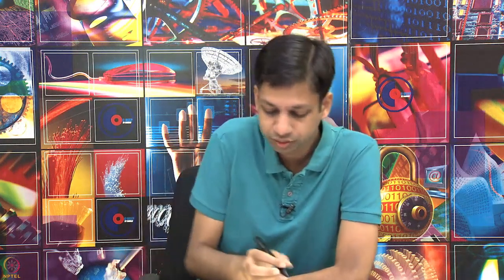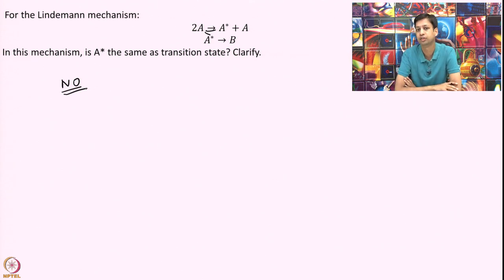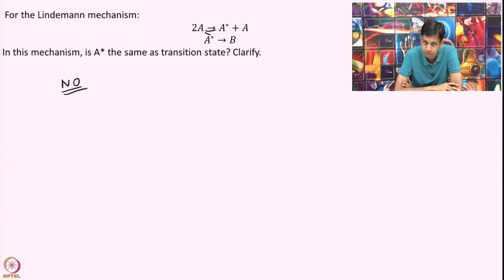The correct answer is no. A* is not the transition state. The transition state is a very specific structure — it is the maximum structure along the reaction coordinate and the minimum structure along all coordinates perpendicular to the reaction coordinate. A* does not need to satisfy all these criteria.